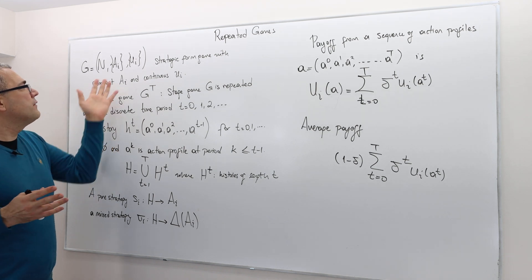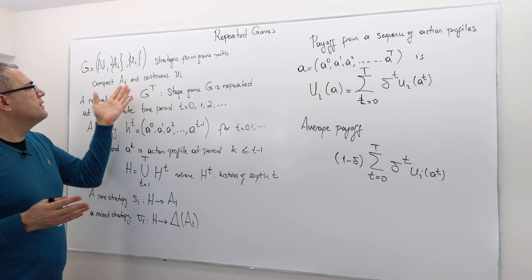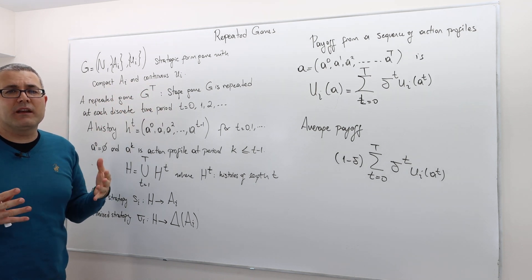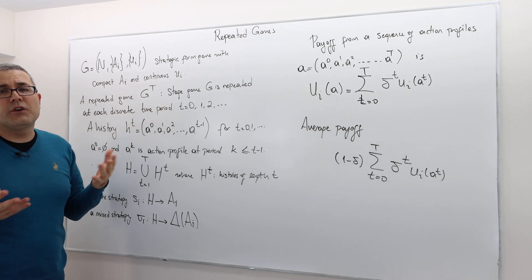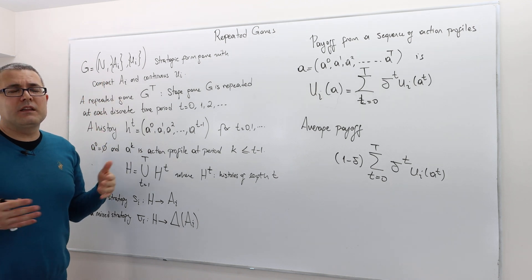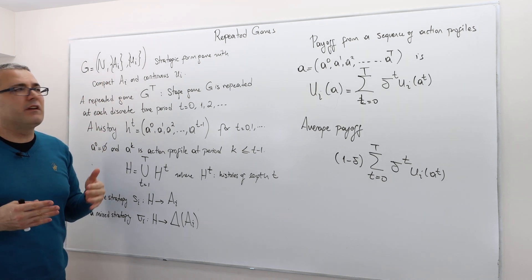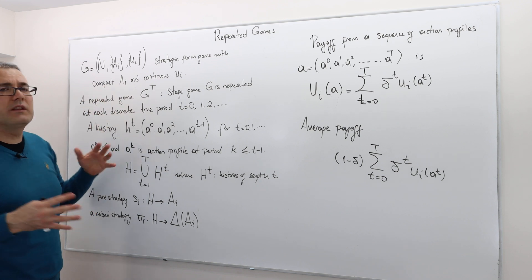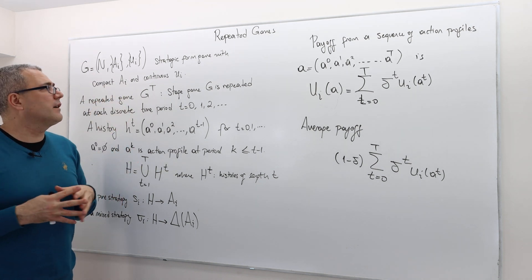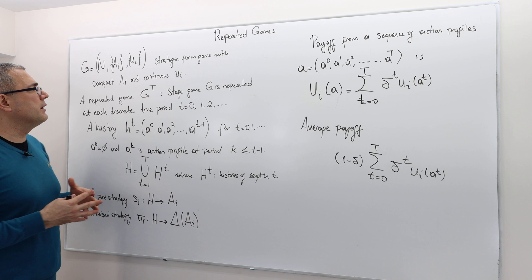If the strategic form game is finite, these two conditions will be satisfied automatically. Alternatively, if the game is not finite, meaning there are infinitely many available actions, then we want the set of actions to be compact and the payoff functions to be continuous.